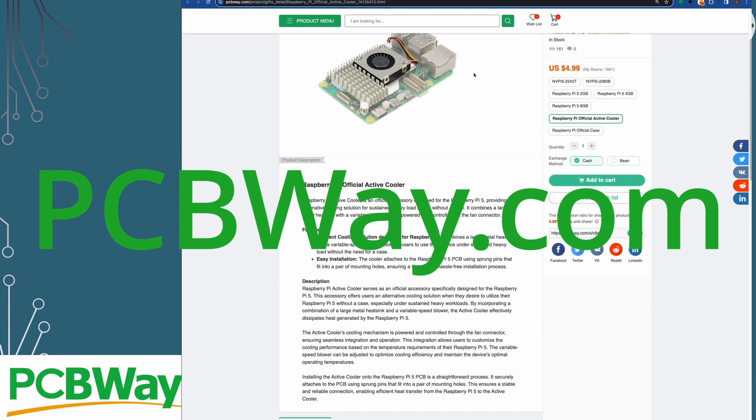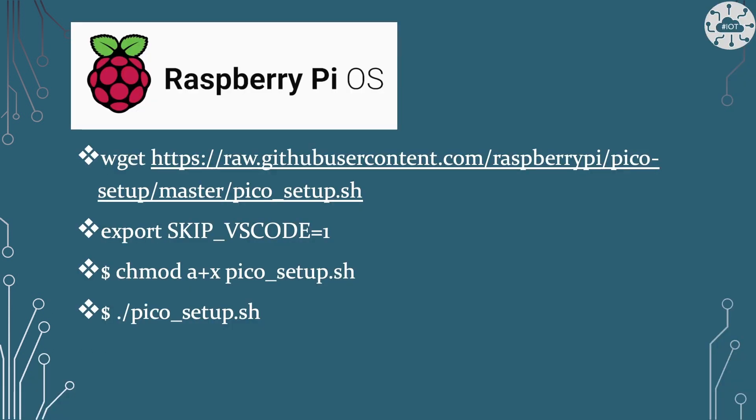I installed the Raspberry Pi Pico toolchain on Raspberry Pi OS using the quick start approach, downloading pico_setup.sh. I told it to skip VS Code because I don't generally use VS Code — I use other approaches and generally edit code remotely on my Mac. I then made the Pico setup script executable and ran it, and it worked absolutely fine and installed flawlessly on Raspberry Pi OS.